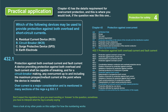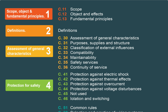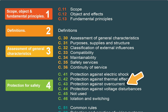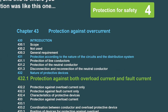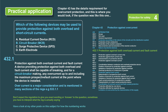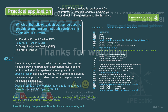Here's another question on overload current: which of the following devices may be used to provide protection against both overload and short circuit currents? It's not asking a fundamental principle — it's asking for a specific example. You should have a good idea of what the answer is, but you might just want to check. Start at the contents page: overload and short circuit currents, we'll be thinking about protection for safety, which is part four. Look through the contents and there it is — protection against overcurrents. In the section on nature of protective devices, regulation 432.1: protection against both overload currents and fault currents. A device providing protection against both overload and fault currents shall be capable of breaking — and for a circuit breaker, making any overcurrent. It's really quite simple to find the answers if you do it methodically.